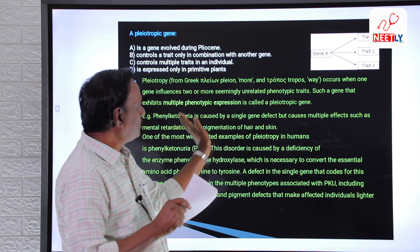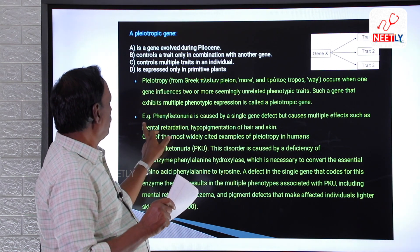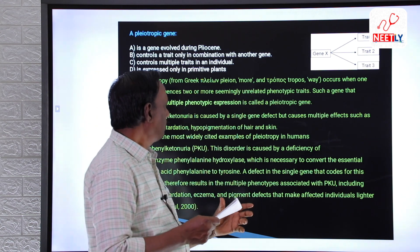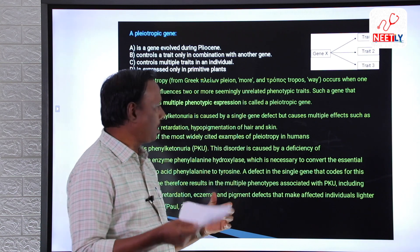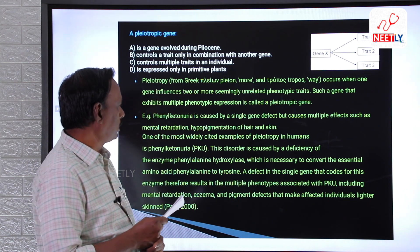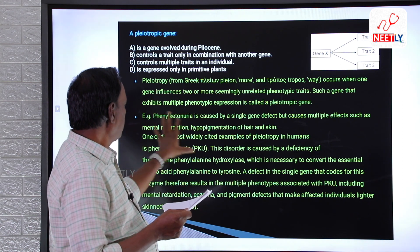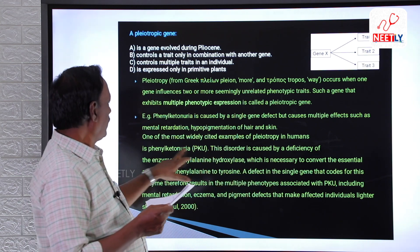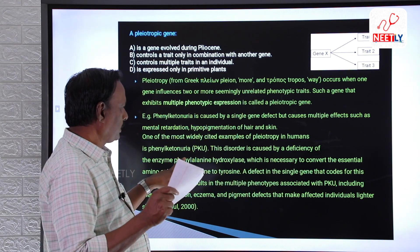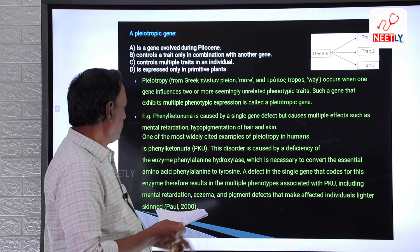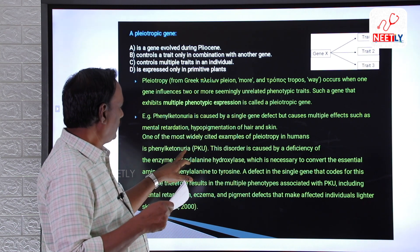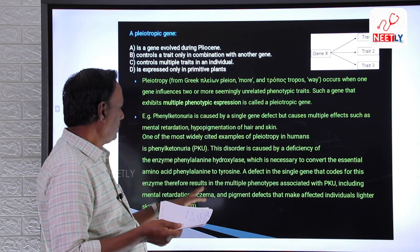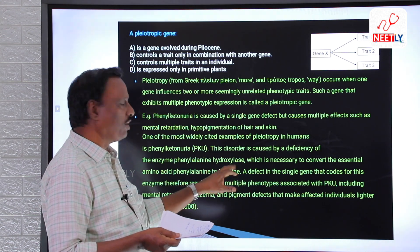The best example of a pleiotropic gene is phenylketonuria. Phenylketonuria is an effect caused due to mutation in a single gene — the PKU gene — which is responsible for the phenylalanine hydroxylase enzyme.